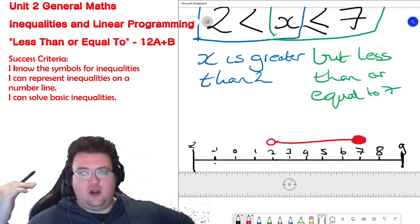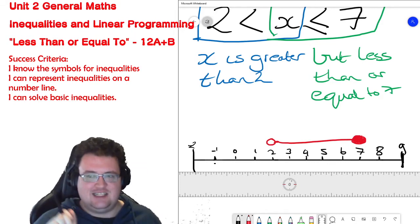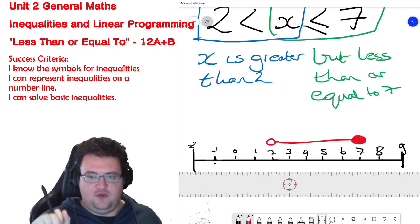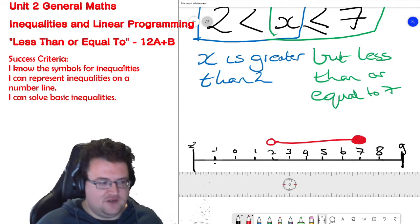So what I've got there, 2 is greater than, or sorry, x is greater than 2 but less than 7 or equal to 7. Seven would be represented on a number line with an open circle over the 2 and a closed circle over the 7.